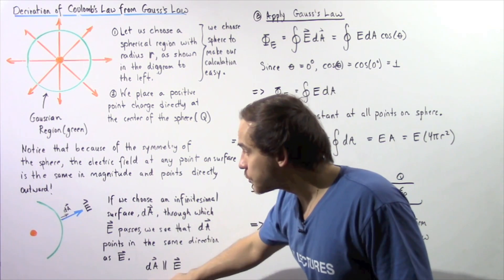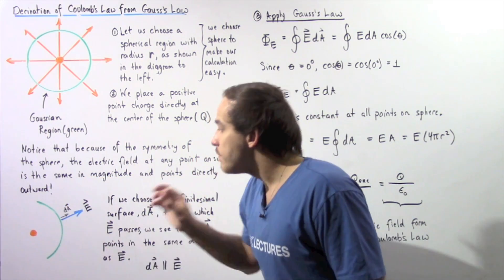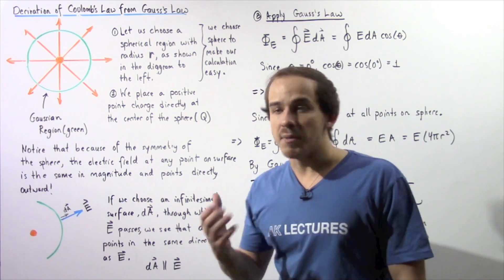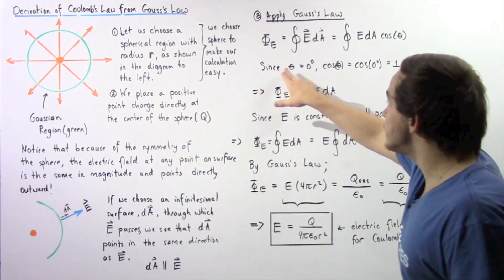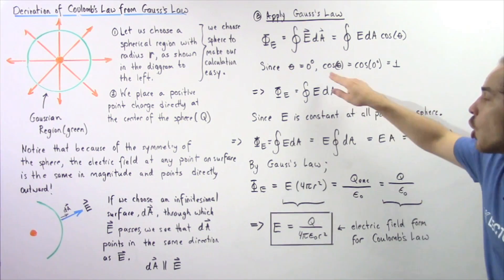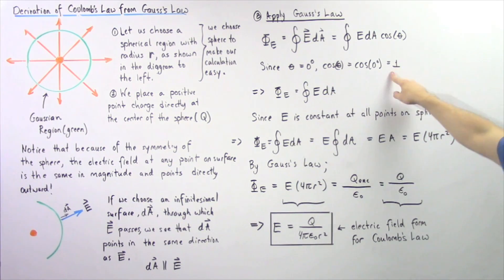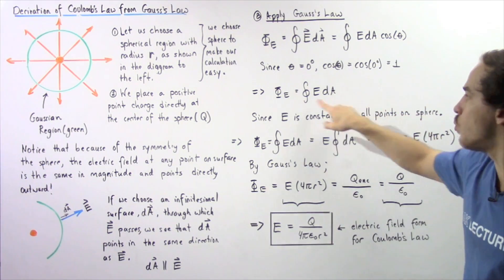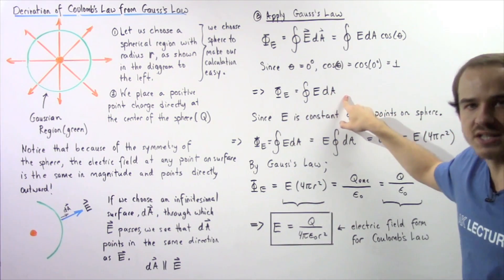We said that these two vectors at any given point point in the same exact direction, so that means the angle must be zero. Since the angle is zero degrees, cosine of the angle zero is one. This entire cosine of theta simply becomes one, and we get the following result.